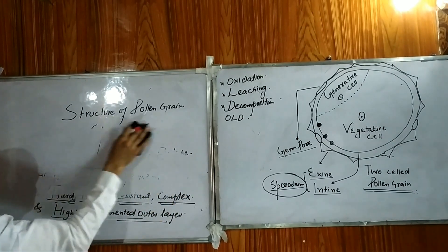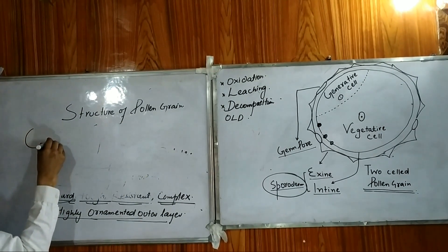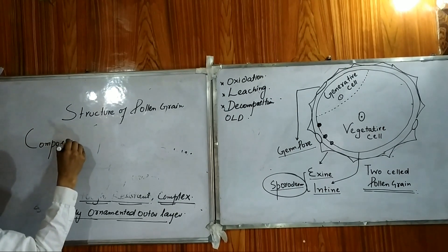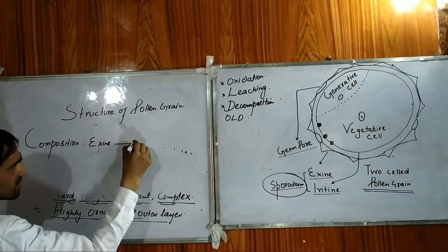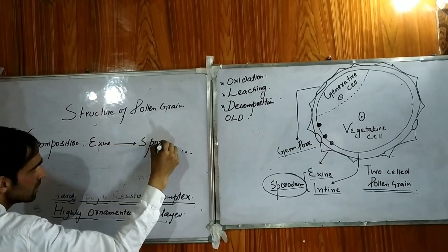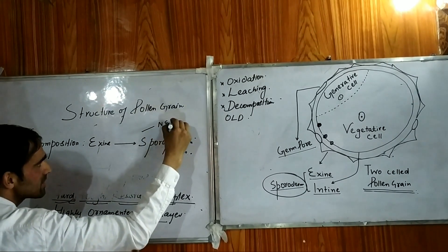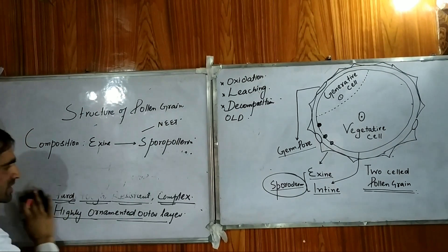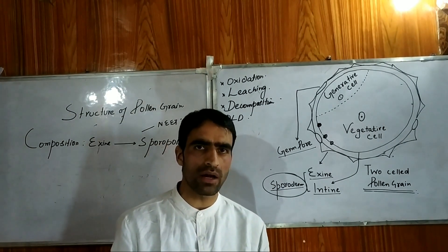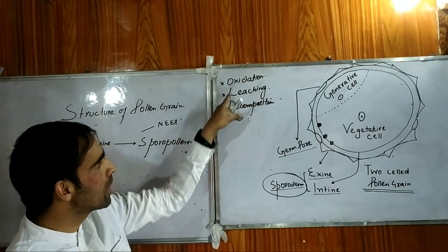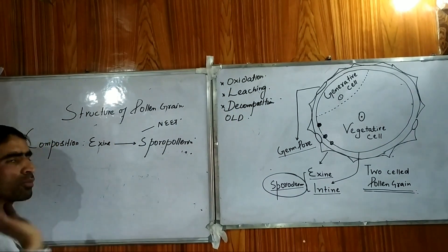What is the composition of exine? Exine is actually composed of one of the hardest biopolymers on planet Earth. This is called sporopollenin. This was asked in NEET exams in 2017. Since exine is hard and resistant because of sporopollenin, the pollen grain will be well-protected. Sporopollenin is the reason for the toughness of the exine.